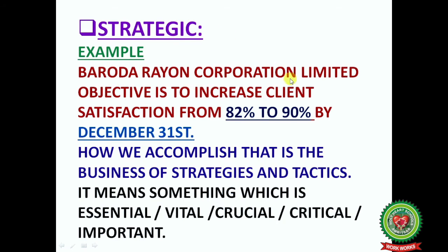Key term — Strategic. Example: Baroda Rayon Corporation Limited's objective is to increase client satisfaction from 82 percent to 90 percent by December 31st. Here the standard set is a strategy of customer satisfaction — going from 82 percent to 90 percent. How to accomplish that is the business of strategies. Strategic means something which is essential, vital, crucial, critical, and important.